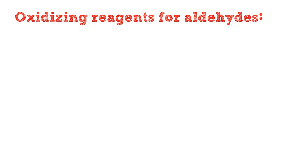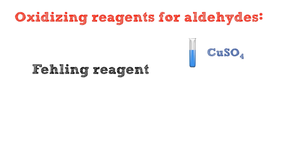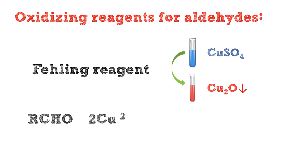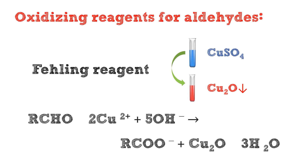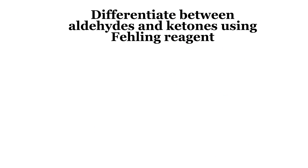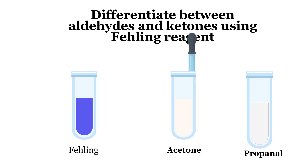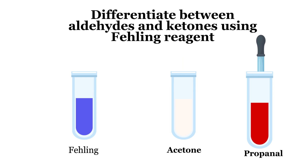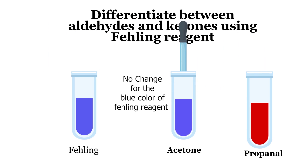Fehling's solution is an alkaline solution of copper ions that, when warmed with any aldehyde, oxidizes the aldehyde into the corresponding carboxylic acid. The blue copper ions are reduced to red-orange copper ions. With ketones, no change is observed.